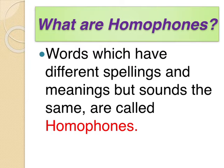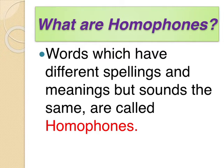First of all I would like to tell you what are homophones. The words which have different spellings and meanings but sound the same are called homophones. In short, joo words sunne mein same hote hain, but spelling aur unke meaning different rehte hain — that is called homophones.